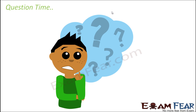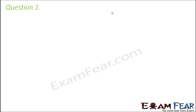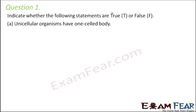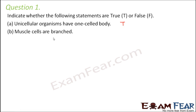Question number one: indicate whether the following statements are true or false. 'Unicellular organisms have one cell body' — uni means one, so organisms which are made up of one cell — that's what this statement says, so yes, this is true. 'Muscle cells are branched' — so if you talk about the different cells present inside the human body, you get a lot of variety.